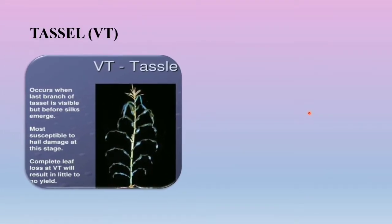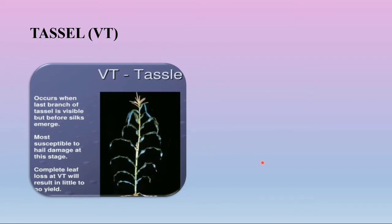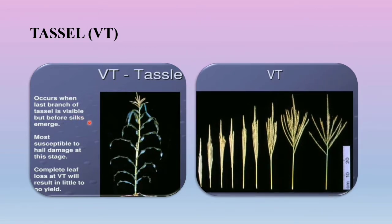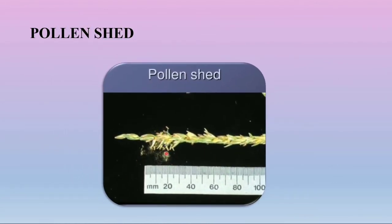Coming to the tassel stage (VT): the tassel is fully emerged 2 to 3 days prior to silking. The plant is at full height and all leaves have emerged. Hail damage is most significant at tasseling and can result in 100% yield loss if the tassel is lost. Silking will generally begin in 2 to 3 days. Stress occurring a few days prior to tasseling can cause ear development to slow, resulting in a lag between pollen shed and silking, which can lead to barren ears. You can observe here how the pollen is shed in this image.